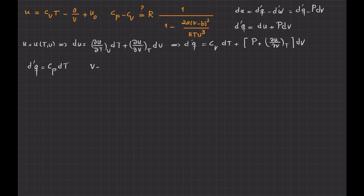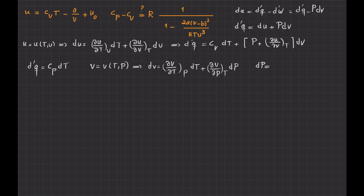In general, V is a function of temperature and pressure, so dV equals the partial derivative of V with respect to T at constant P, times dT, plus the partial of V with respect to P at constant T, times dP. But if we keep the pressure constant, then dP equals zero, and dV simplifies to the partial derivative of V with respect to T at constant P, times dT.